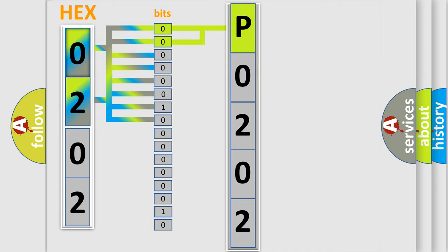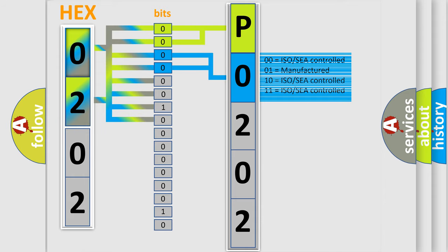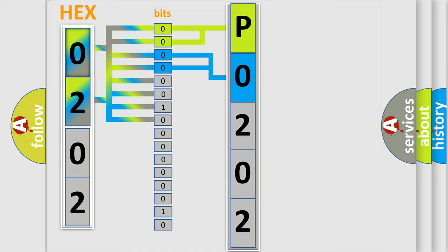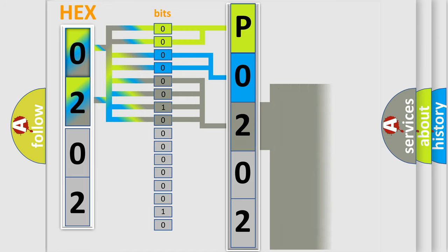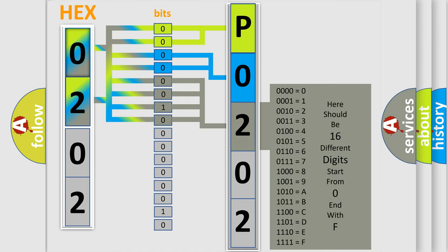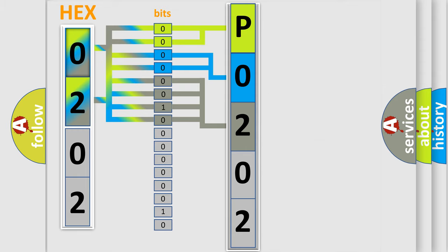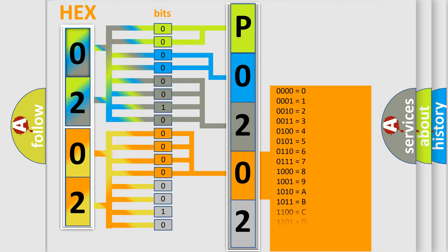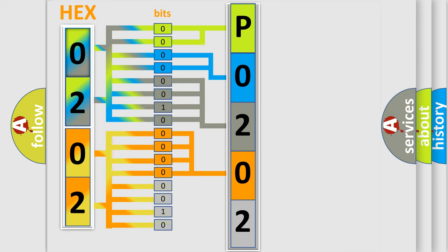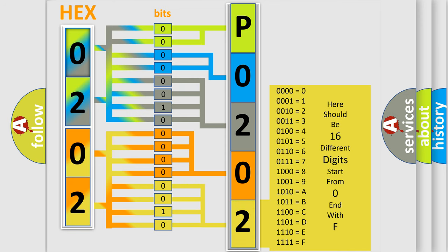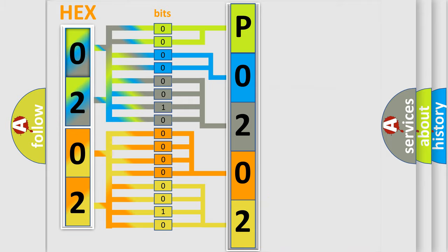The next two bits determine the second character. The last bits of the first byte define the third character of the code. The second byte is composed of a combination of eight bits. The first four bits determine the fourth character of the code, and the combination of the last four bits defines the fifth character. A single byte conceals 256 possible combinations. We now know in what way the diagnostic tool translates the received information into a more comprehensible format.